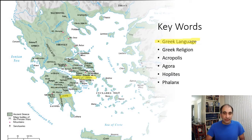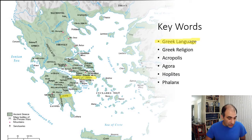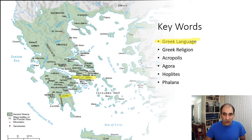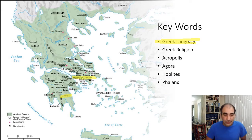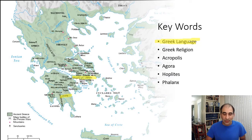Another important similarity between these Greek city-states is Greek religion. They all shared the same polytheistic gods — they were polytheistic, meaning many gods. Zeus is their major god, and you have all the other gods in their religious hierarchy: Apollo, and of course all the mythologies — Medusa and all those great stories that the Greeks came up with. So they did have a similar religion.